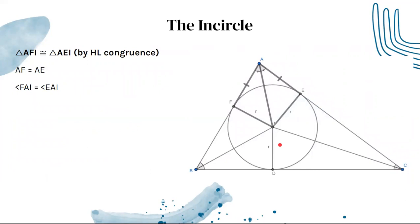First off, triangle AFI is congruent to AEI. This is because these are both right angles, because the tangent is always perpendicular to the radius. We can then use HL congruence, or hypotenuse-leg congruence, because the hypotenuse of both triangles is AI, and the legs of both triangles are R.